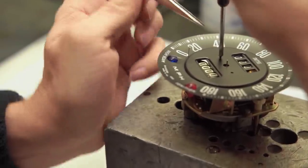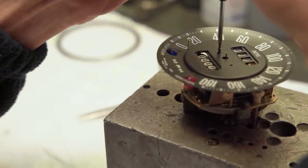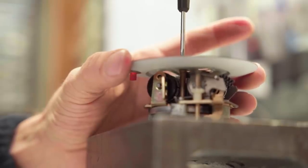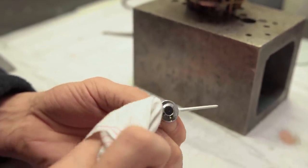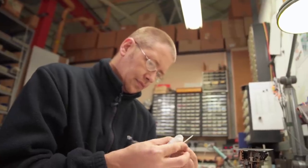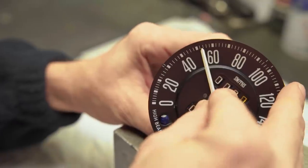Now I'm going to fit the mile per hour dial and carefully secure with the dial screws. Put the pointer on after a little polish and then we have something that looks like an instrument coming back together.